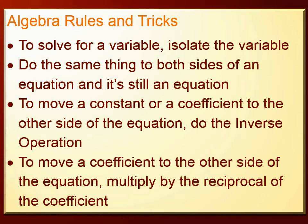Believe it or not, those four rules are just about all you need to solve pretty much any algebraic expression. Let's review them. Number one: to solve for a variable, isolate the variable — change the equation so it says the variable equals something. Number two: if you do the same thing to both sides of the equation, it's still an equation. Number three: to move a constant or a coefficient to the other side of the equation, do the inverse operation. Number four: to move a coefficient to the other side of the equation, multiply by the reciprocal of the coefficient.